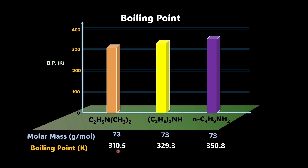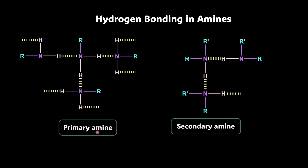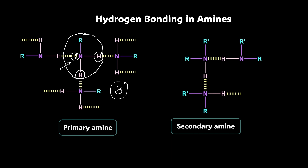Why is that? The answer lies in hydrogen bonding. When we talk about a primary amine, it has two hydrogens and one lone pair. So one lone pair and two hydrogens are involved in hydrogen bonding. Per molecule, there are three hydrogen bonds which are possible.